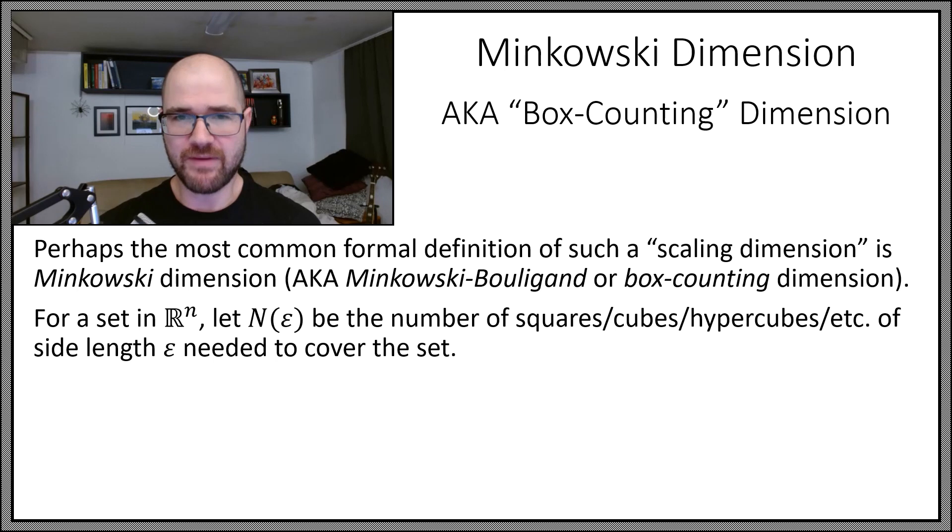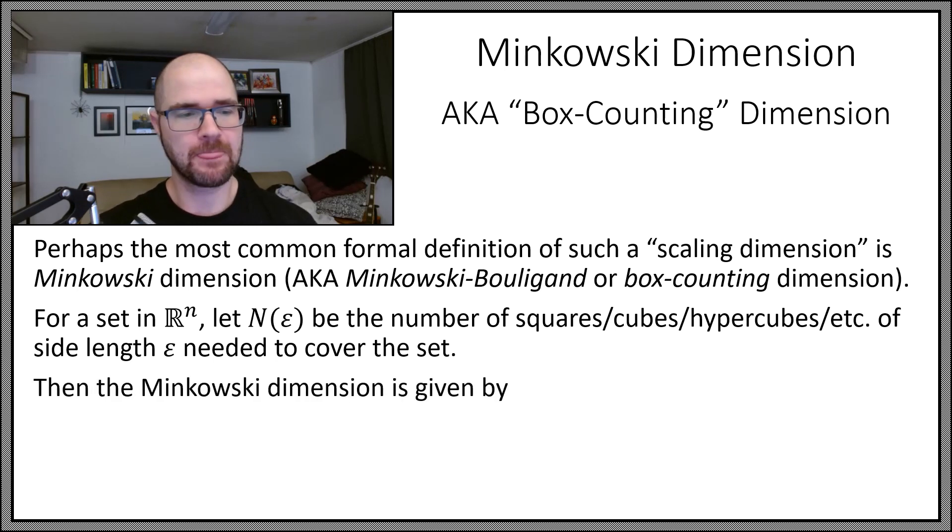So for a set that lives in n-dimensional Euclidean space, suppose capital N of epsilon is the number of squares, cubes, or hypercubes, or whatever, of side length epsilon. So in two-dimensional space you would have an epsilon by epsilon square, in three-dimensional space an epsilon by epsilon by epsilon cube, and so forth. Let N of epsilon be how many of those is needed to totally cover the set. The Minkowski dimension is computed by taking a limit as epsilon approaches zero from above of minus log of this quantity over log of epsilon.